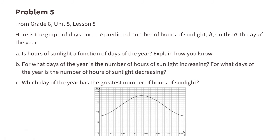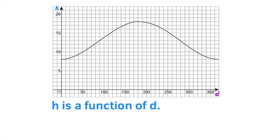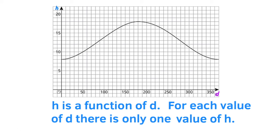Problem number 5 from 8th grade Unit 5 Lesson 5. Here is the graph of days and the predicted number of hours of sunlight, H, on the dth day of the year. A. Is hours of sunlight a function of days of the year? Explain how you know. H is a function of D. For each value of D, there is only one value of H.